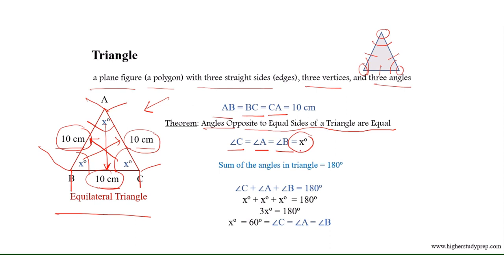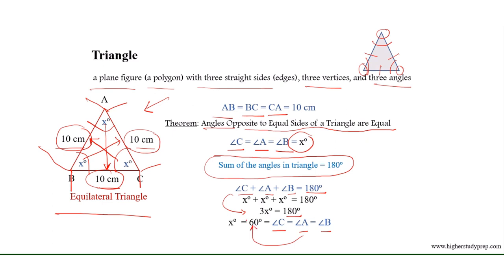We can find the value of x by applying the rule that the sum of angles in a triangle is 180 degrees. So we write C plus A plus B equals 180 degrees, which gives us 3x equals 180 degrees. Therefore, angle C equals angle A equals angle B equals 60 degrees. In an equilateral triangle, all angles are equal to each other and are 60 degrees.